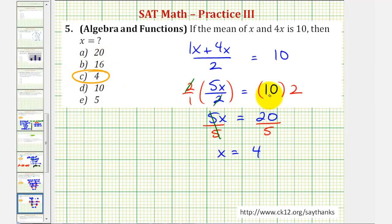But I do want to show how we could have solved this in one step. If we go back to where we had 5x divided by 2 equals 10.